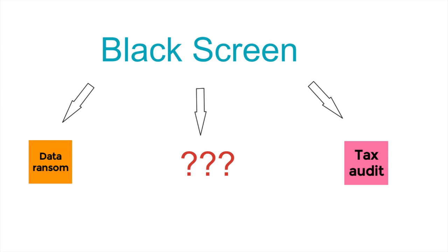You are in a catch-22 situation. Someone is holding all your records. And for you to get hold of those records, they require you to pay them a certain amount of money — and it is normally not little money, it is a lot of money. What are you going to do? Pay the money, or get a tax assessment. And for you to prove that you don't owe that amount of tax, you must provide documentary evidence.